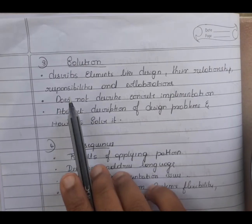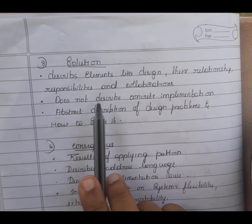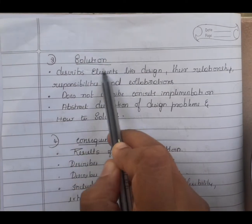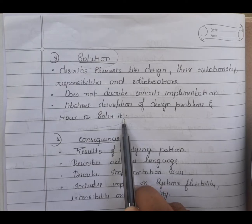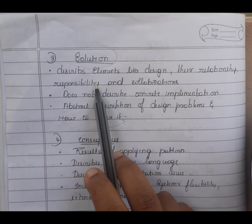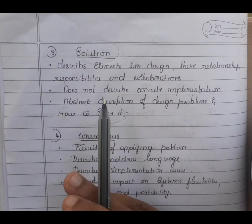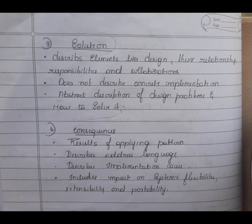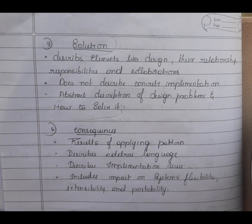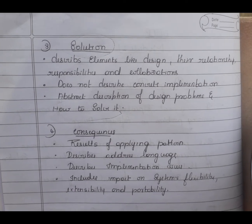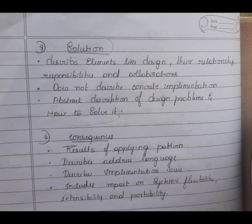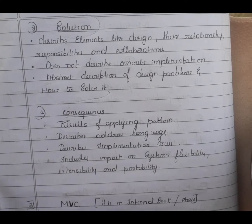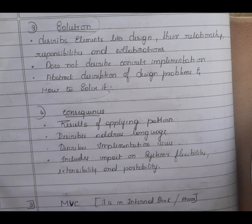Next is Solution. Solution describes the elements that make up the design — their responsibilities, relationships, and collaborations. It does not describe a concrete implementation; rather, it's an abstract description of a design problem and how to solve it. A pattern is like a template that can be applied in many different situations.